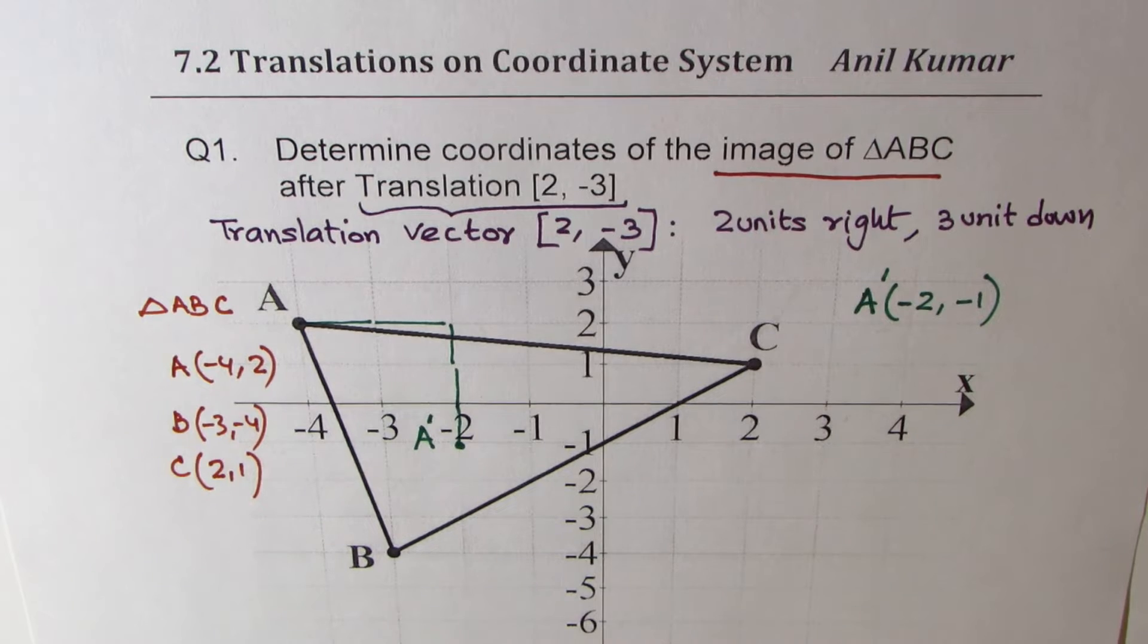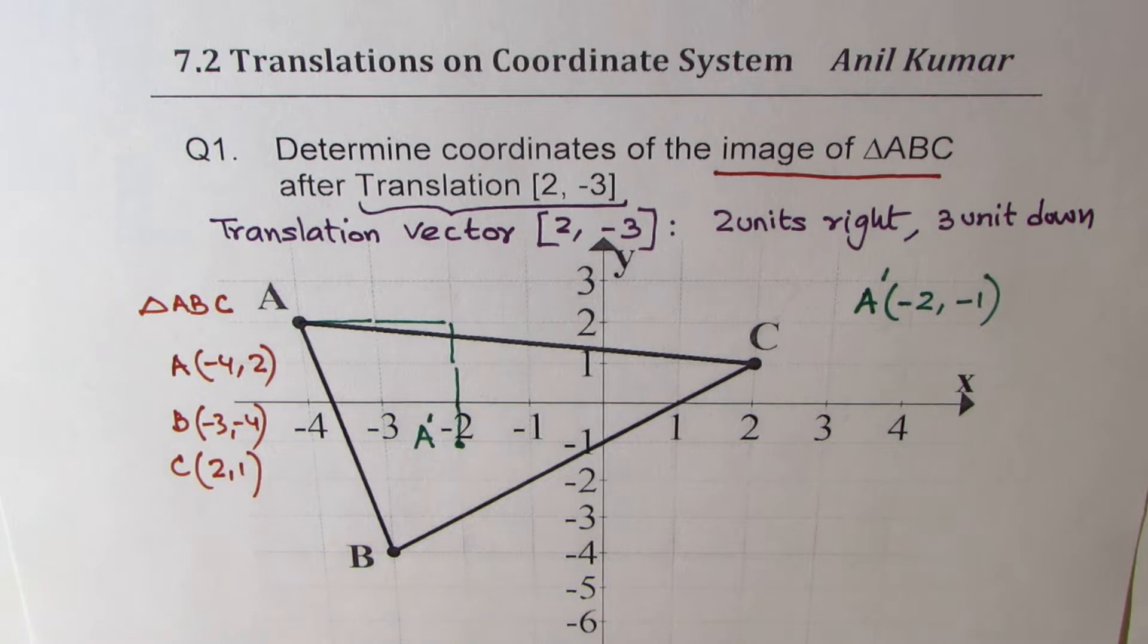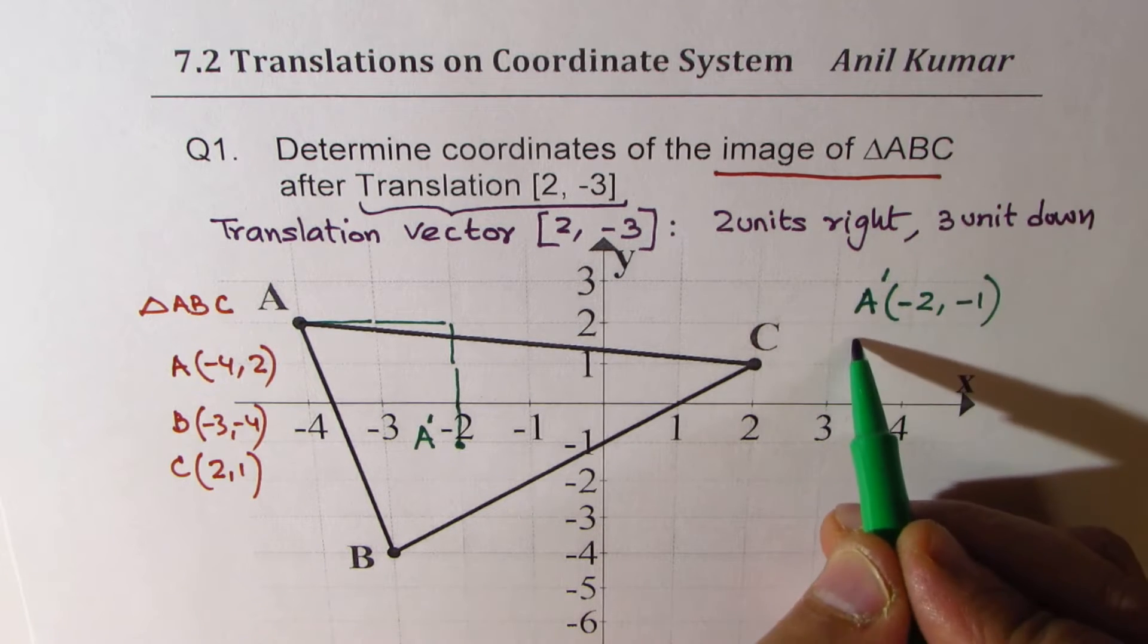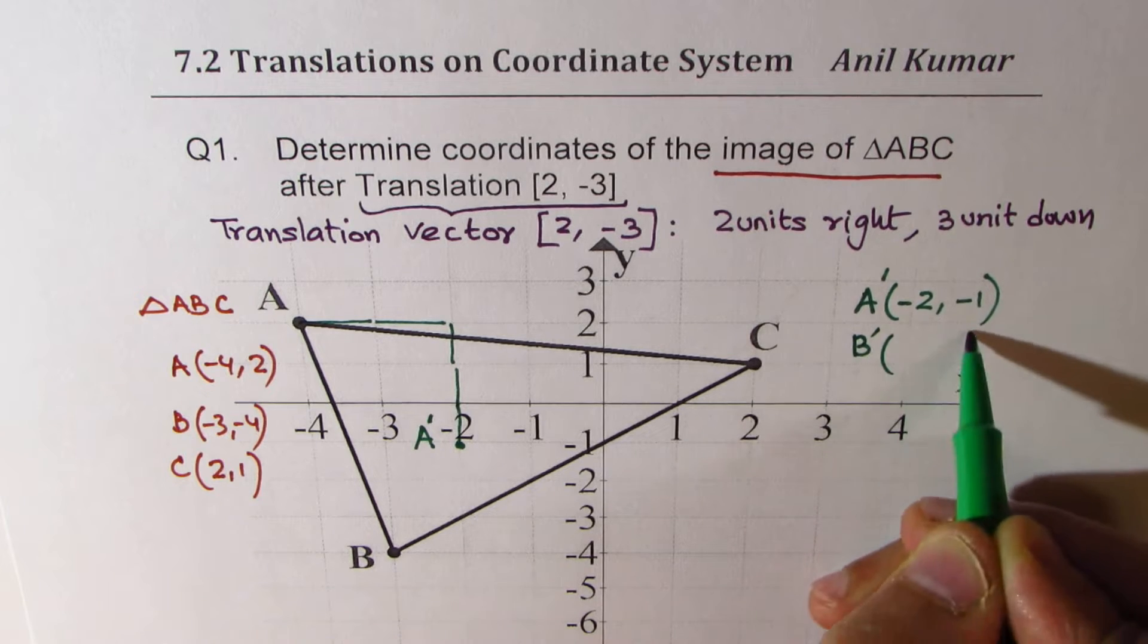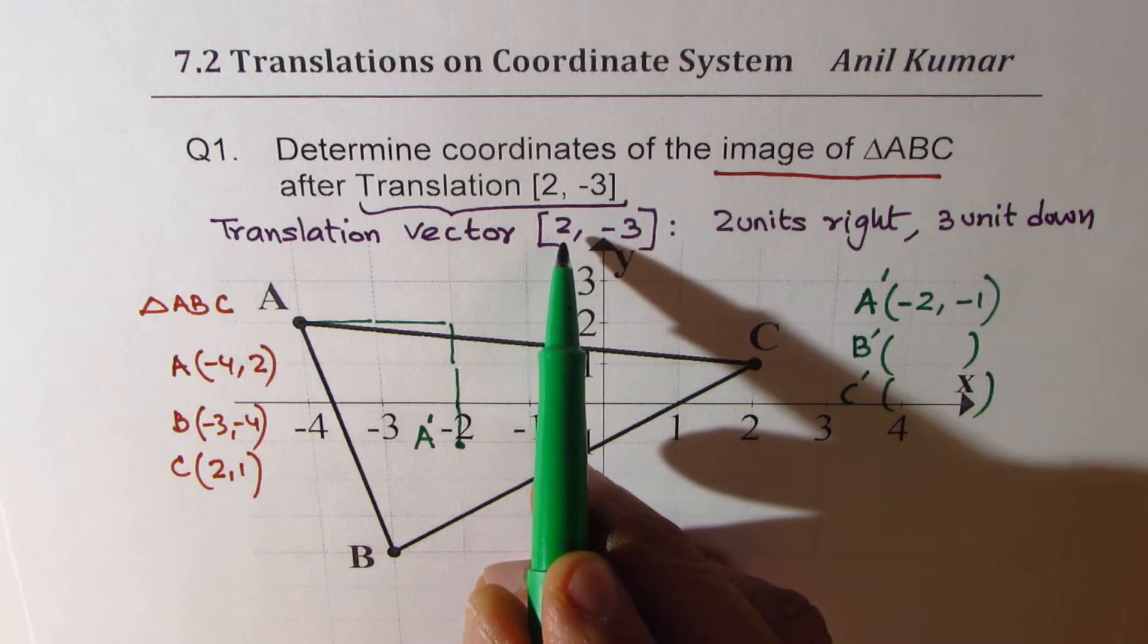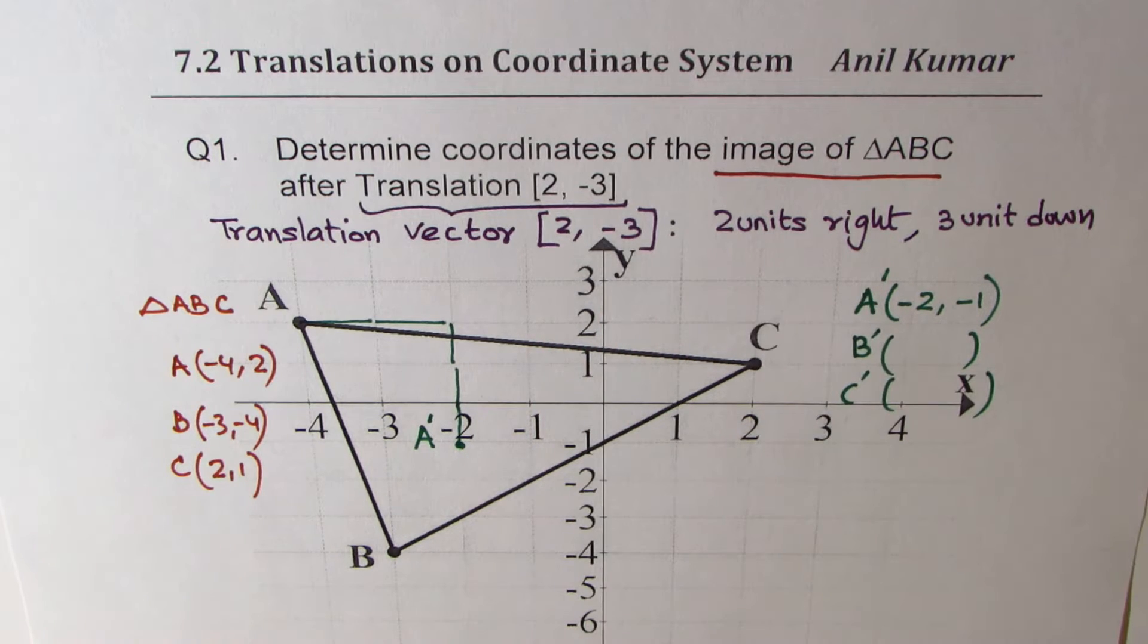Now if you have understood the concept, you can pause the video, answer the question. That is to find all other image points, B' and C', after applying this translation two units right and three down.